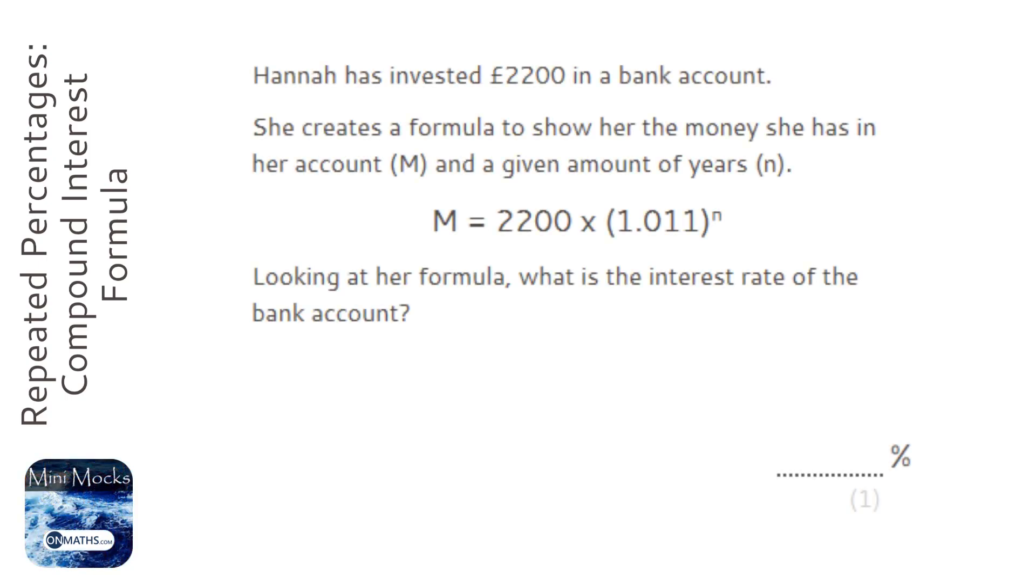Okay, so Hannah has invested some money in the bank and she uses a formula to work out how much money she has after a certain amount of years. The 2200 here is the amount of money that she had.